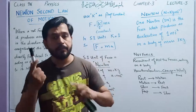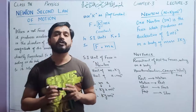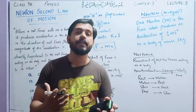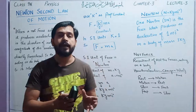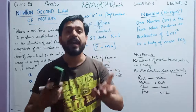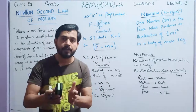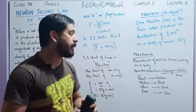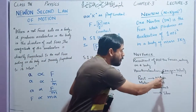Let us recall acceleration from chapter 2. We have studied that the rate of change of velocity is called acceleration. Acceleration is the change in velocity with respect to time. If in a particular time interval the velocity of a body changes, then acceleration is produced in that body. Acceleration is the effect of the rate of change of velocity. Whatever change occurs in a body's velocity, the resulting effect on the body is called acceleration. Acceleration is equal to change in velocity divided by time.